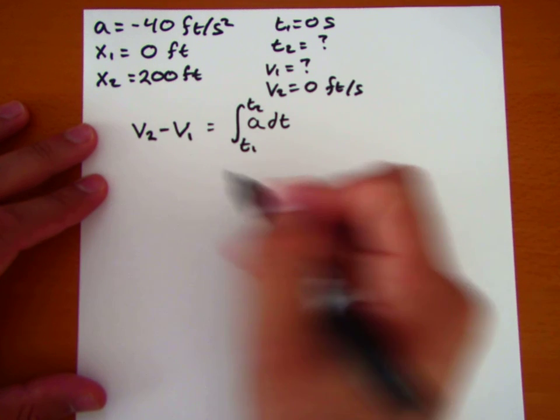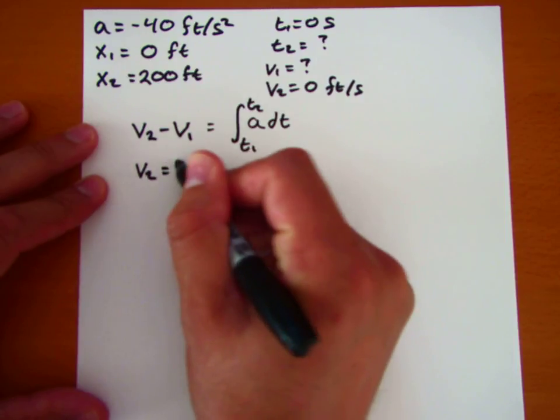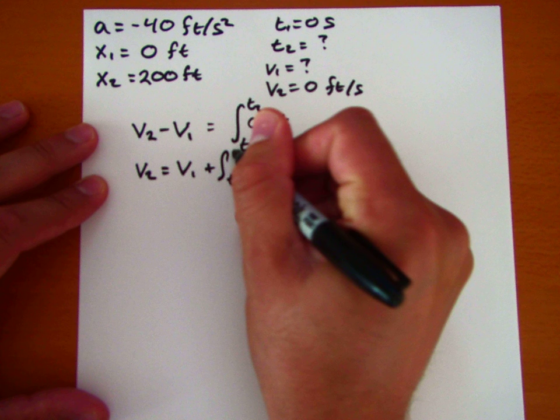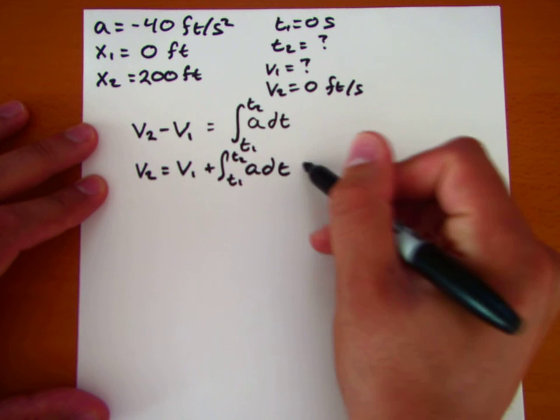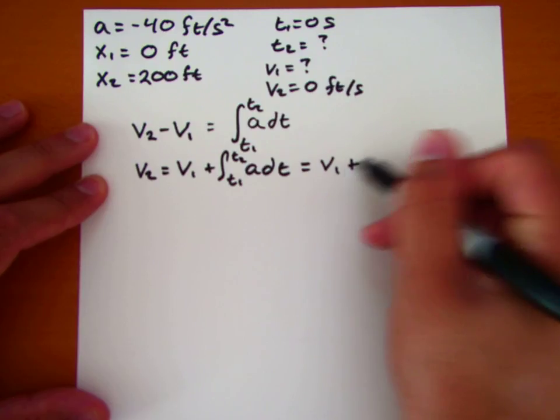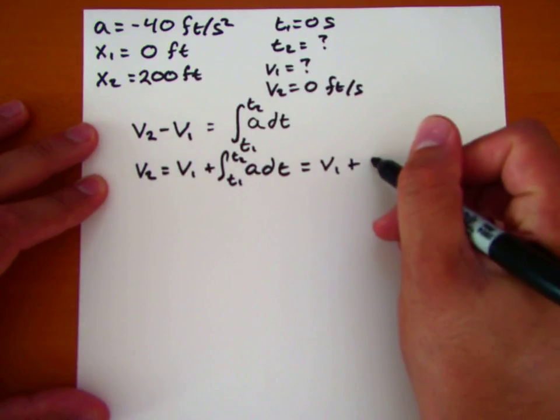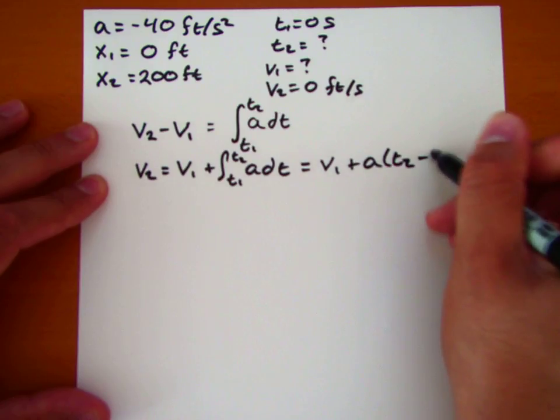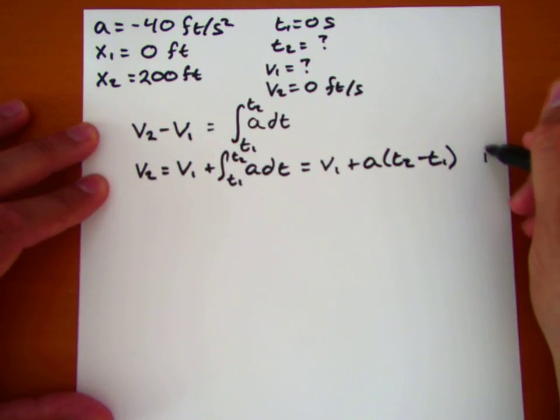So if we do this calculation, what we get here is our final speed is equal to our initial speed plus the integral of acceleration with respect to time. And this just becomes v1 plus, and since a is constant, this integral is actually pretty easy. This just becomes a times t2 minus t1. And so this is our first real equation right here, for the first integral of acceleration.